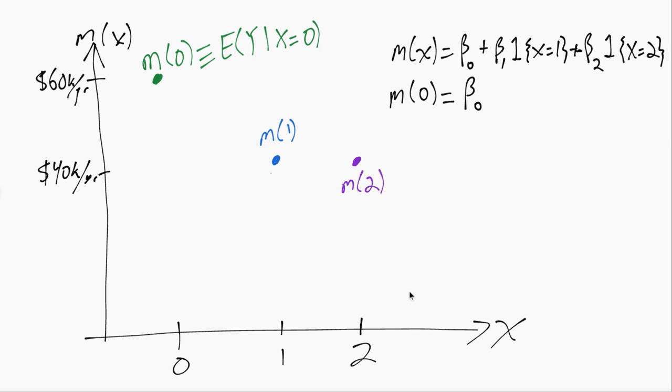Now if we plug in M of 1, we'll always get this beta 0 because there's no x involved in that term. Our indicator that x equals 1 is an indicator that 1 equals 1, which is true, so that indicator function evaluates to 1. We'll get beta 1 times 1 for that second term, or just beta 1.